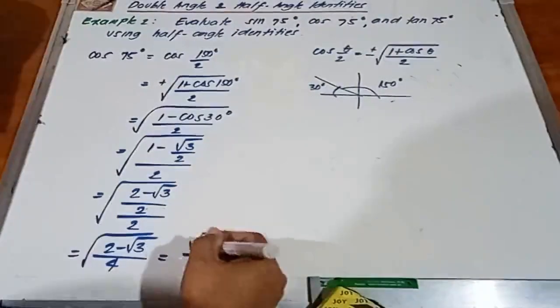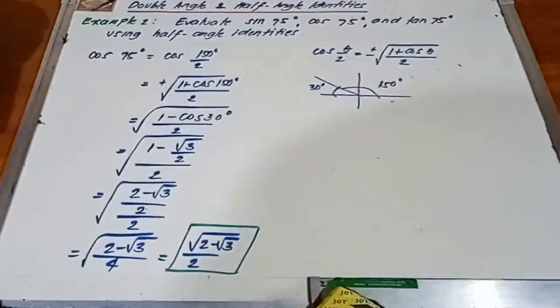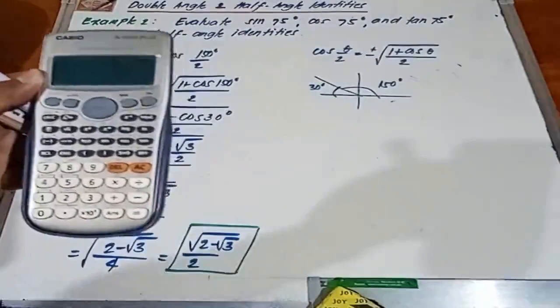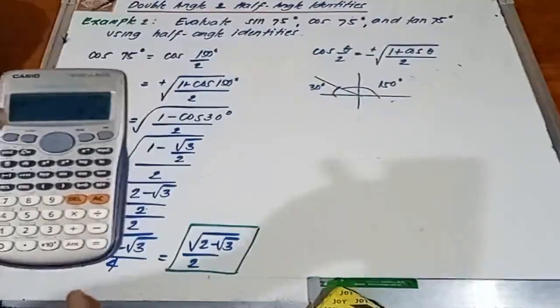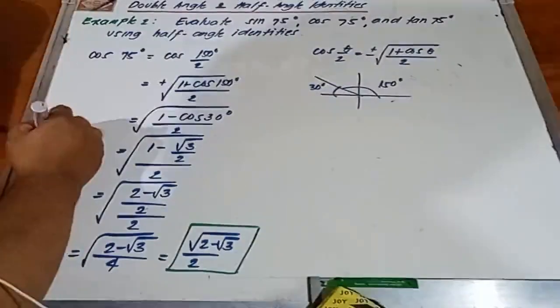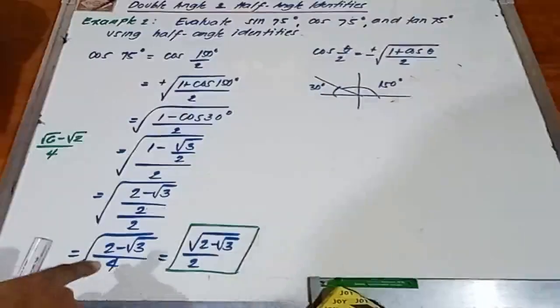Again, pwede pa itong isimplify. Simplify muna natin. Kasi pag unahan natin ang cosine 75 degrees gamit ng calculator, that is square root of 6 minus square root of 2 over 4. Simplify natin ito.